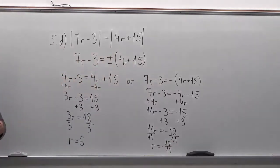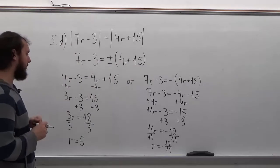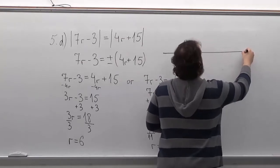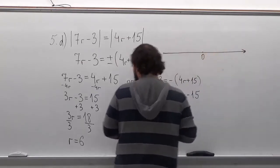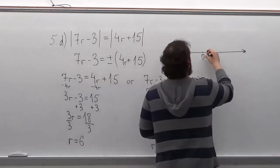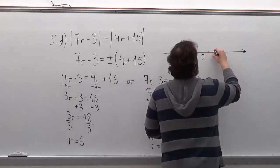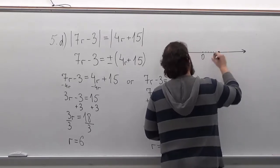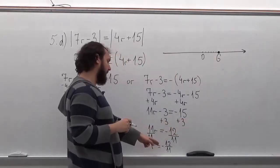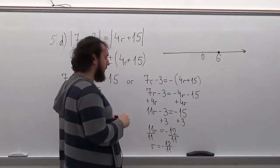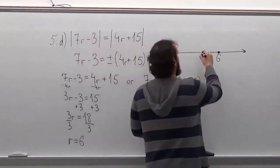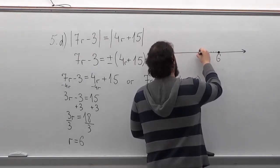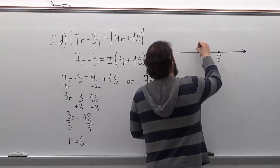Now we need to draw a number line and show those points on it. Put a 0. So our first answer was 6 — we'll put a dot here. And our second answer was minus 12 over 11. This answer is going to be between minus 1 and minus 2, so you can write minus 1 and then put a dot right after it and write minus 12 over 11.